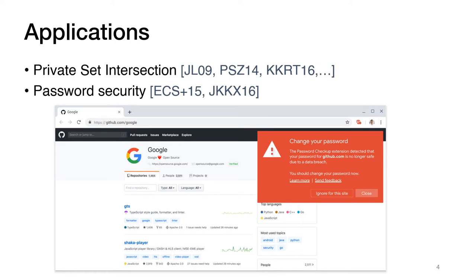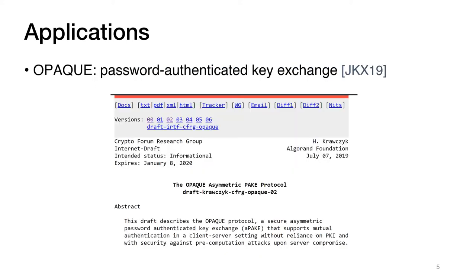Oblivious PRFs have found many applications both as part of larger cryptographic protocols such as private set intersection and in real-world systems. For example, Google's recent password checkup service uses an oblivious PRF to check whether a user's password has been leaked online as part of breaches at other companies. An oblivious PRF is also a main building block in password-authenticated key exchange protocols such as the recent OPAQUE protocol that is being standardized by the Internet Research Task Force.